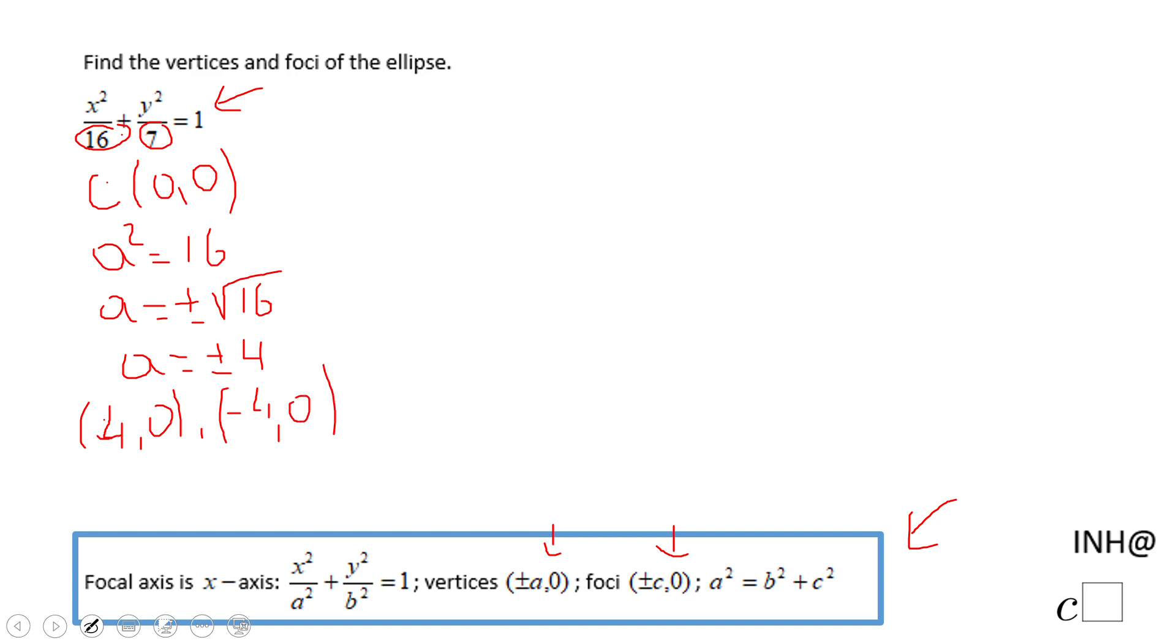Now how do I find the foci? We're gonna have to use this equation here. a squared equals b squared plus c squared.